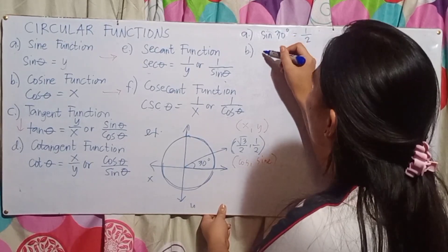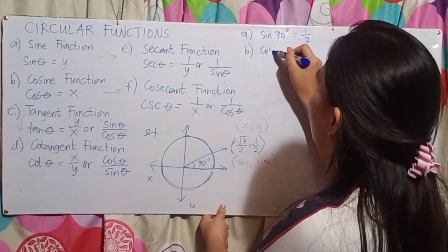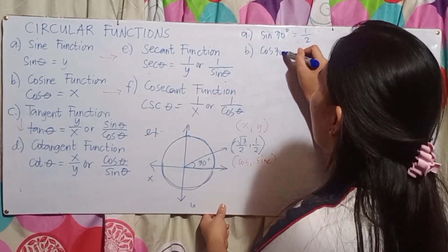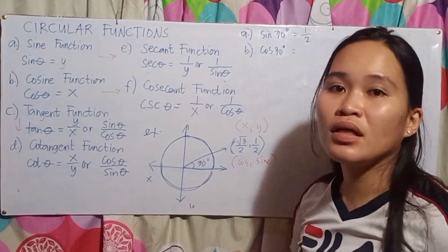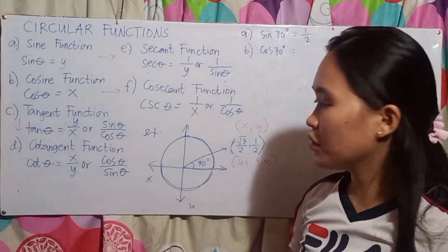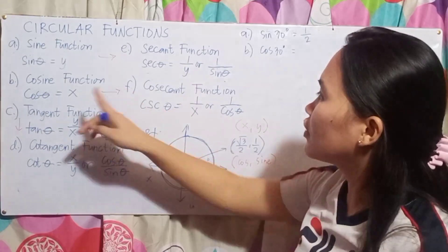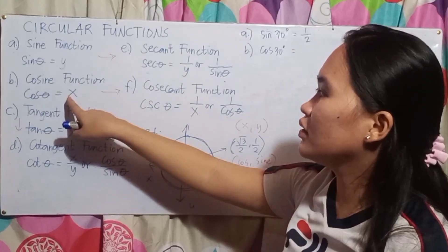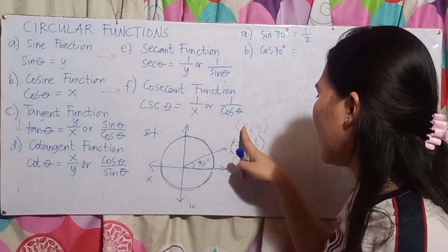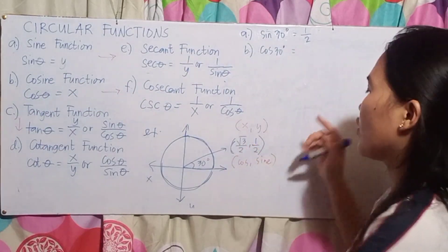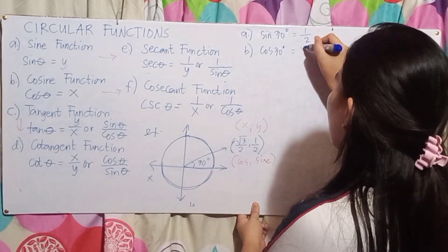Next is cos 30 degrees. Cosine is the value of x. So the value of x is √3/2. Therefore, cos 30 degrees equals √3/2.